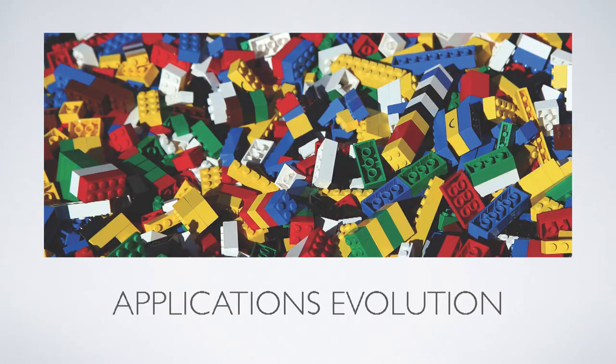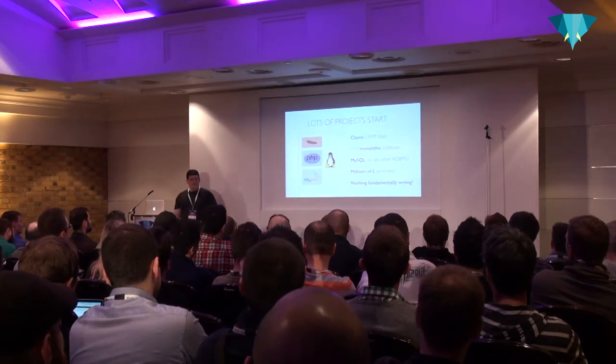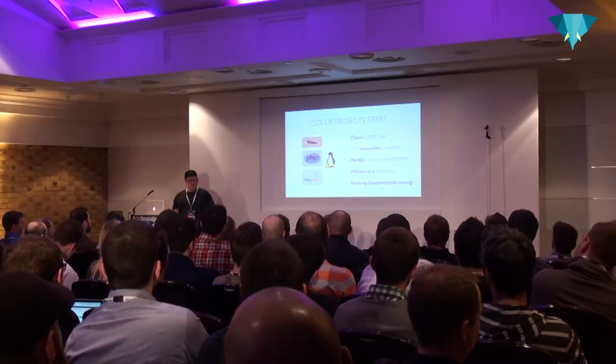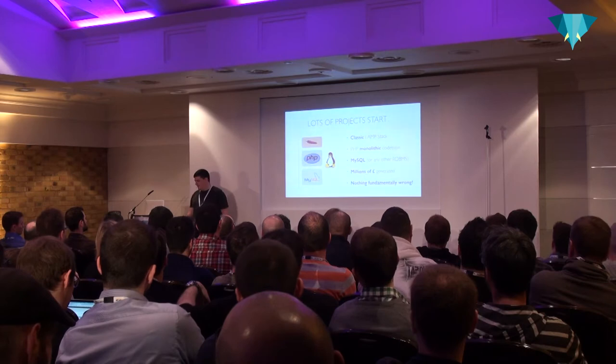Let's get started with application evolution. Lots of projects start very simple with a classic LAMP stack — there's nothing fundamentally wrong with that. You can have a pretty monolithic PHP codebase that is fully tested and more or less decoupled. You can use a dependency injection framework, something like Symfony. You can use MySQL, PostgreSQL, Oracle, or even SQL Server. There are lots of e-commerces generating millions with pretty much this setup.